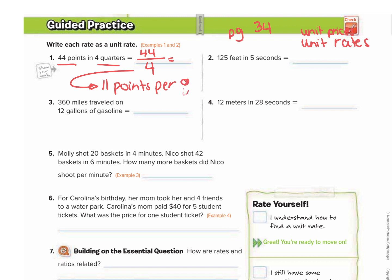And we usually use that word per to represent a unit rate. Number two, 125 feet in five seconds. So we want to find how many feet per second, so in one second. So we have 125 over five. We're going to divide that and we get 25 feet per second.